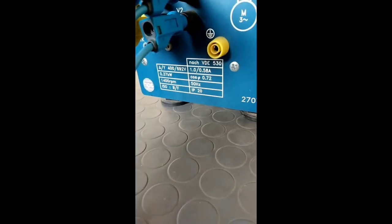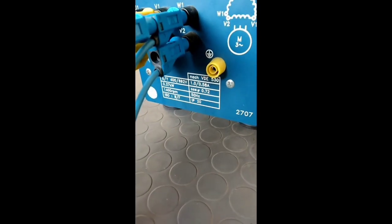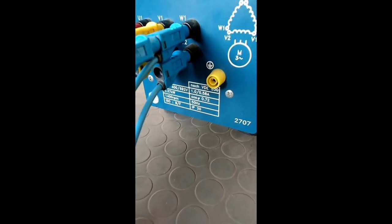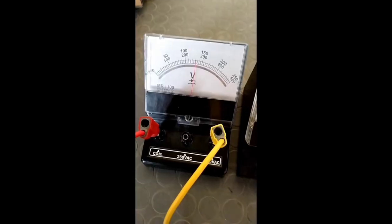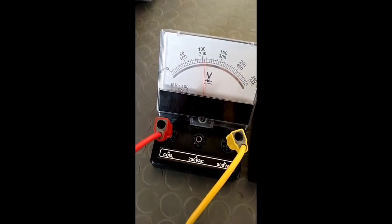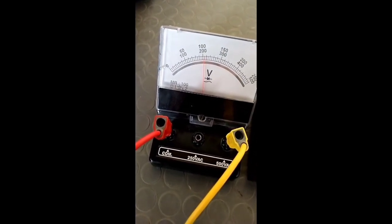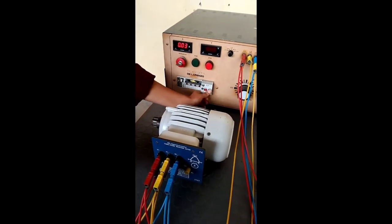For this delta connection, rated voltage is 400 volts and the rated current is 1 ampere, and the rated speed is 1400 RPM. We are using the voltmeter of range 0 to 500 volts and ammeter of range 0 to 5 amperes. We are also using tachometer to measure the speed of induction motor.